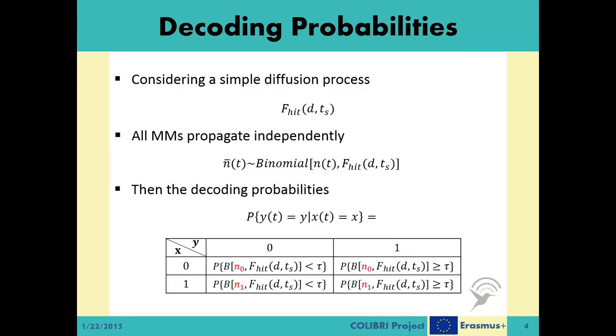Then, to calculate the decoding probabilities, we need the four conditional probabilities of yt equals y given that xt equals x, where both y and x can either be 0 or 1. Putting the formulation of yt from the previous slide, for all of these four cases, we can write down the resulting probabilities as shown in the table here.